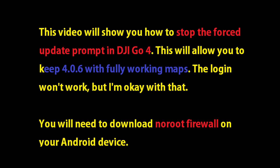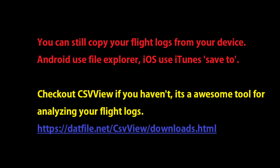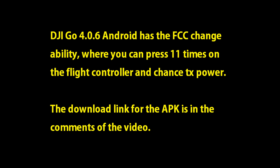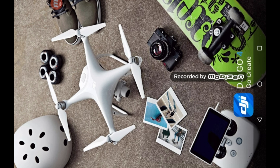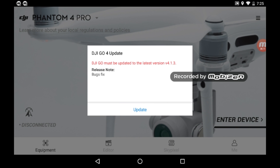For this how-to, we're going to tackle stopping the force update that's come out on DJI Go. It's going to allow you to keep older versions like 4.0.6, and basically just stop that stupid force update prompt. There's a link to the APK for 4.0.6 in the comments. Are you sick and tired of the message saying 'must update to the latest version 4.1.3'? I want to choose when I update.